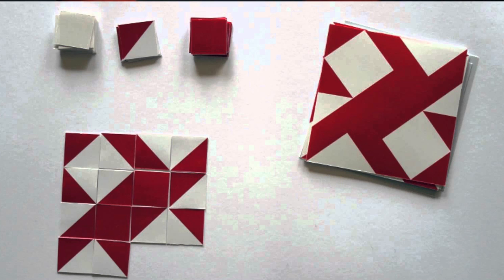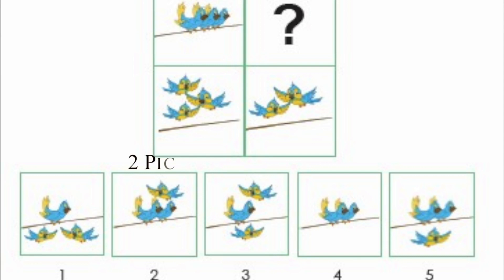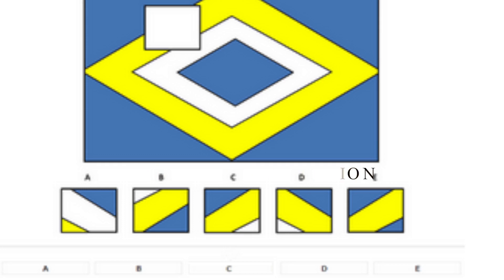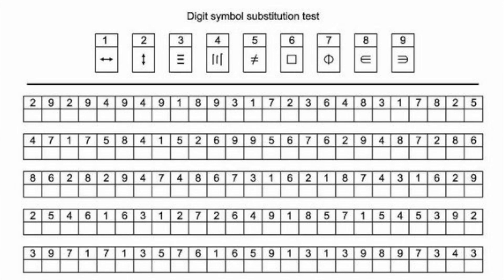Now it is the performance test. There are 5 tests in the performance test. Number 1: Block Design Test. Next: Picture Arrangement — you can arrange pictures correctly. That is picture arrangement. 3: Object Assembly — the idea that you can assemble different parts correctly. That is the object assembly. 4: Picture Completion. 5: Digit Symbol — you can substitute symbols as required.